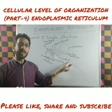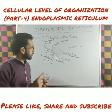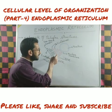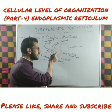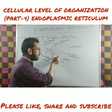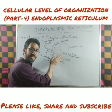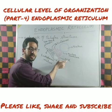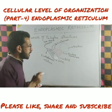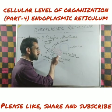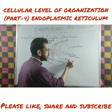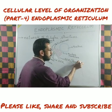Rough endoplasmic reticulum is called rough because you can see small granular structures present on its surface. These dotted structures are called as ribosomes. The ribosomes are attached on the surface of endoplasmic reticulum which makes its surface rougher, so it is called as rough endoplasmic reticulum. Due to the presence of these ribosomes, which are small granules, this rough endoplasmic reticulum is also called as granular endoplasmic reticulum.